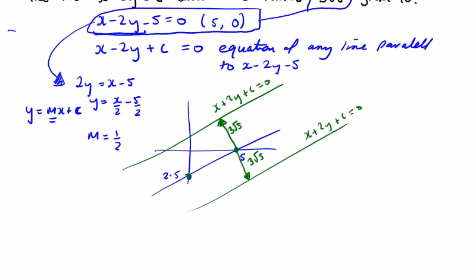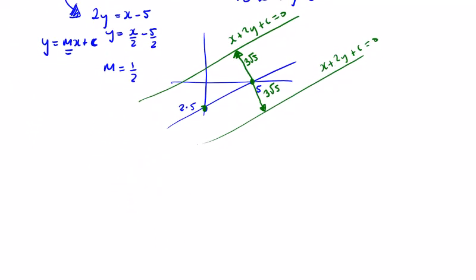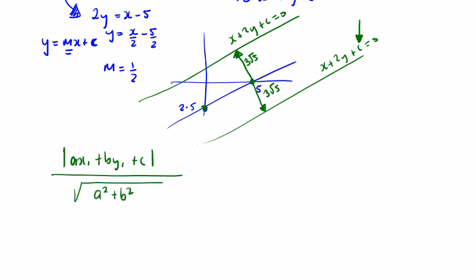Applying the perpendicular distance formula — the only unknown we have is c. Writing our values: a = 1, b = −2, x₁ = 5, y₁ = 0, and c is what we're solving for.